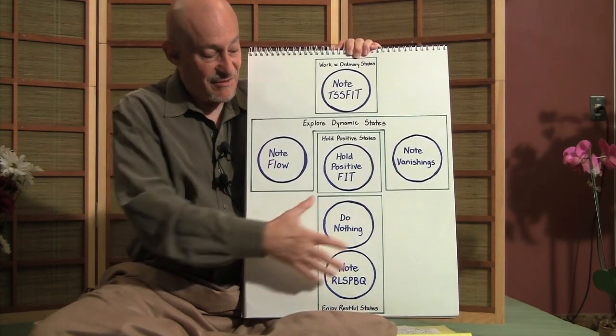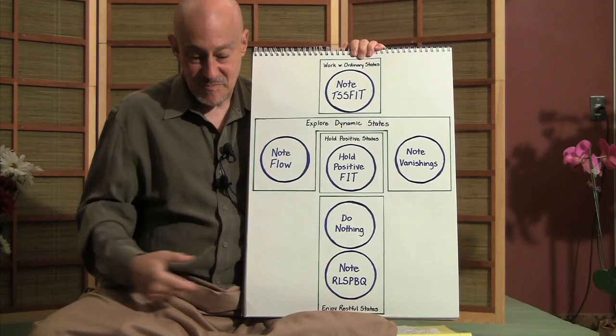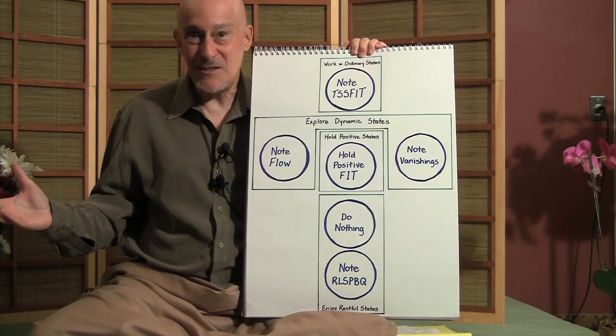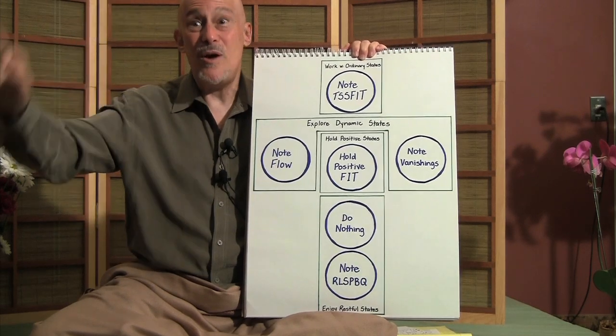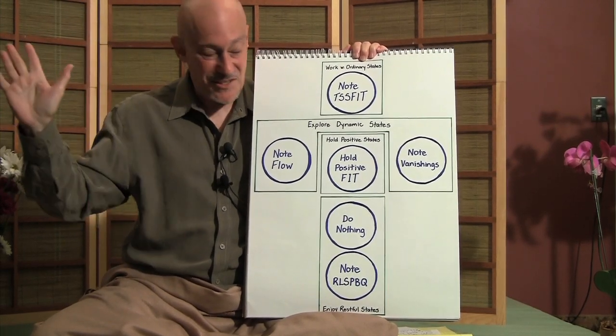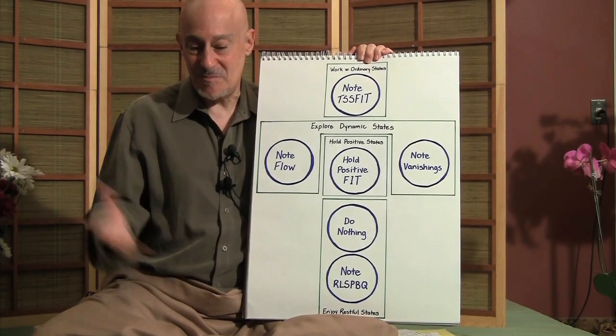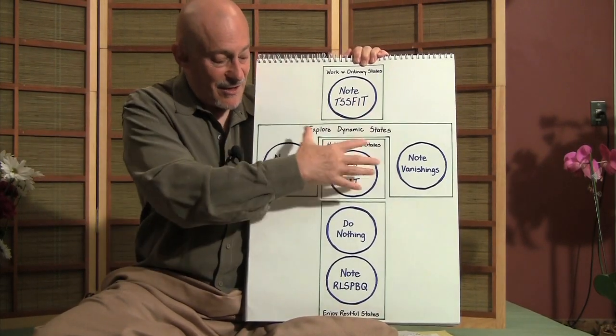In that case, this represents a Sears Roebuck catalog of spiritual practices, and you decide to make one purchase. That's it. Maybe you like noting restful states. So that's what you do, and you don't worry about all this other stuff.